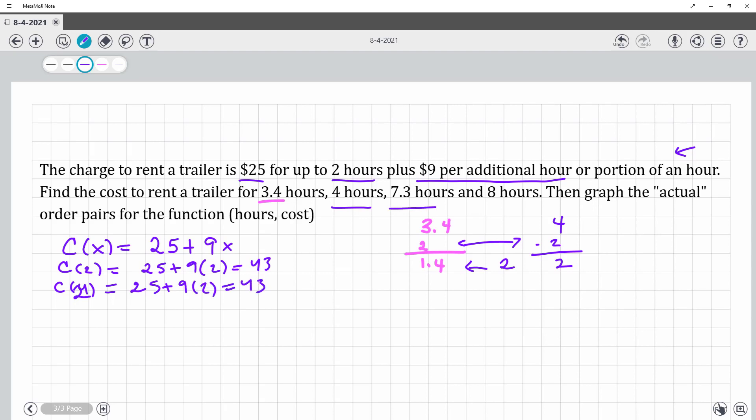And then something like 7.3, so 7.3 minus 2 would be 5.3. You actually would move that up to 6. So C of 6 would be 25 plus 9 times 6, which is 79. And then 8 hours, so 8 minus 2 would be exactly the same.